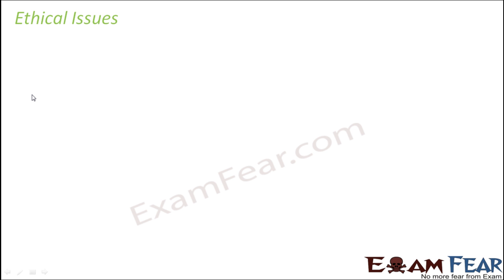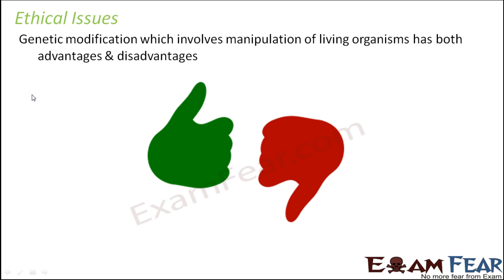Now there are certain ethical issues also associated with the genetic modification of various organisms and plants. Genetic modification involves manipulation of living organisms and has both disadvantages and advantages. Once you are very clear with the process of genetic engineering, mixing and matching of genes becomes very simple. Like you can have an orange inside which you have apple, or a corn that from outside looks like a banana.